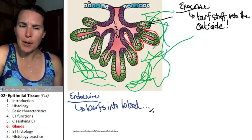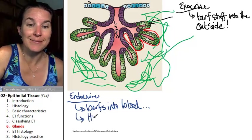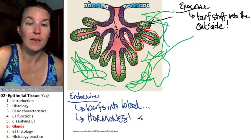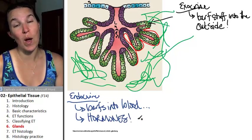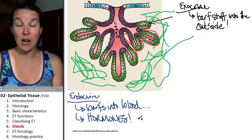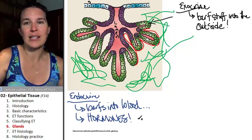And what does it barf? What does an endocrine gland barf into the blood? Hormones. So if the gland is producing sweat and the sweat is being secreted onto your skin, then sweat glands are exocrine glands.